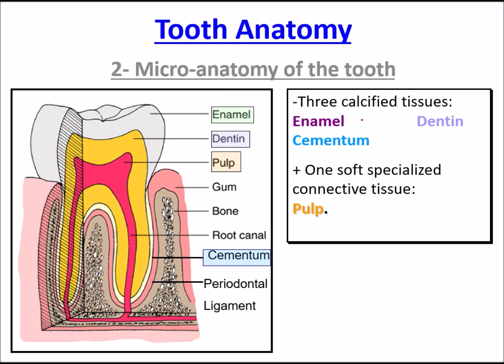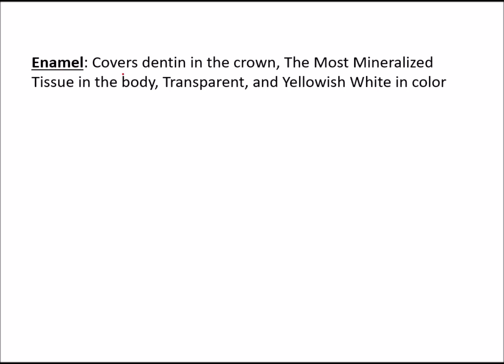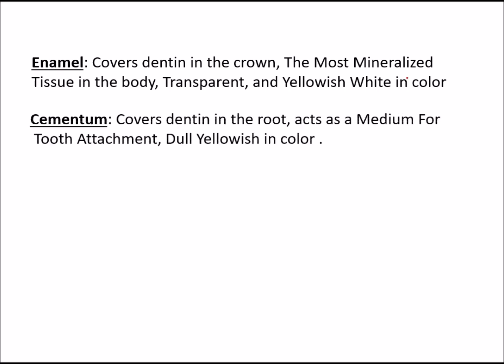Micro anatomy consists of three calcified tissues: first is enamel, second is dentine, and third is cementum. There is also one soft specialized connective tissue, which is the pulp. The pulp opens into a foramen through the root canal. There is cementum, jaw bone, and gum. Enamel covers dentine in the crown and is the most mineralized tissue in the body.